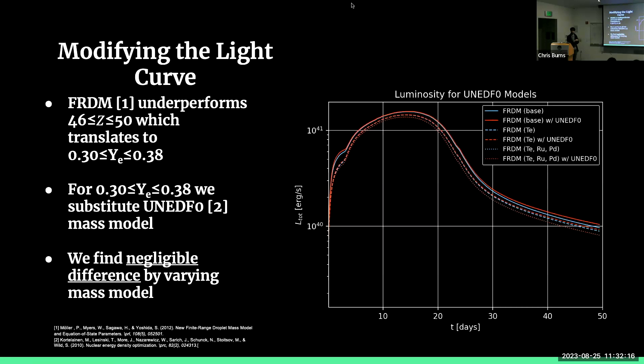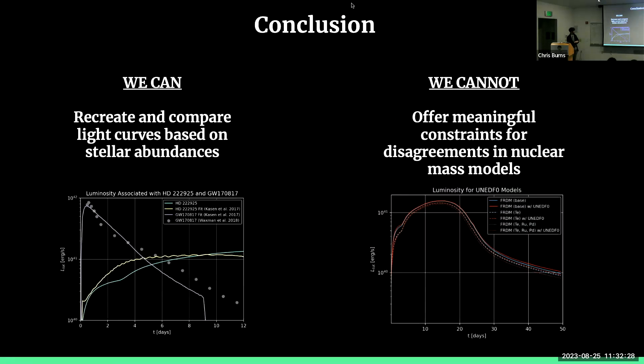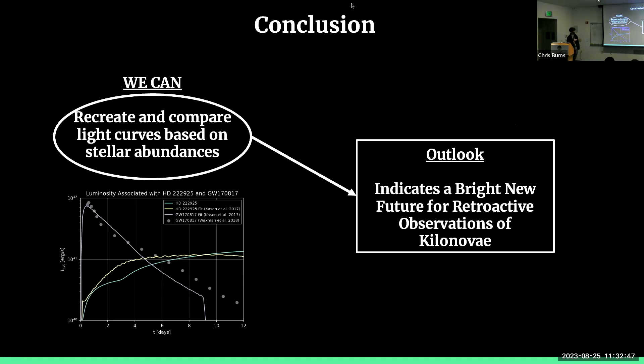And you can see the comparison of all these light curves over here. There's some small differences, and you can see them if you zoom in enough, but for all intents and purposes, these are all the same light curve. So we find a negligible difference by varying the mass model, which ultimately means that we can't pick it apart too much, which leads to the conclusion here. What we can and cannot do by modeling the kilonova light curves. What we can do is we can recreate and compare light curves based on stellar abundances. We cannot offer meaningful constraints, however, for disagreements in the nuclear mass models. But not to dwell too much on what we can't do, what we can do is quite beneficial for the future.